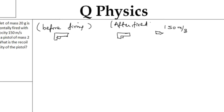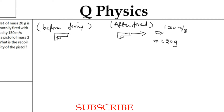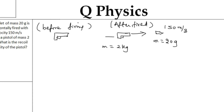It is always easy to draw diagrams and then approach a problem. The mass of the bullet is equal to 20 grams and it is horizontally fired with a velocity of 150 meters per second. The mass of the pistol is 2 kilograms. Recoil velocity means after it is fired, the pistol moves in the opposite direction to that of the bullet.